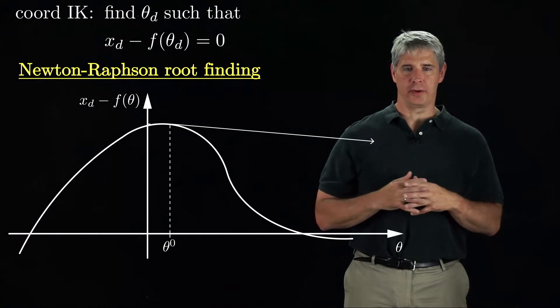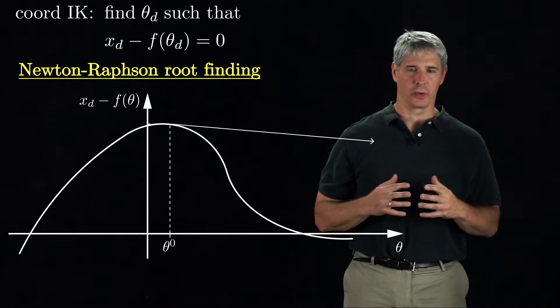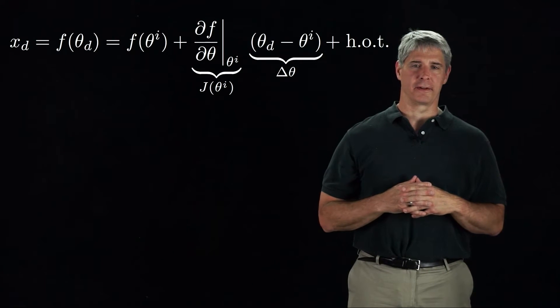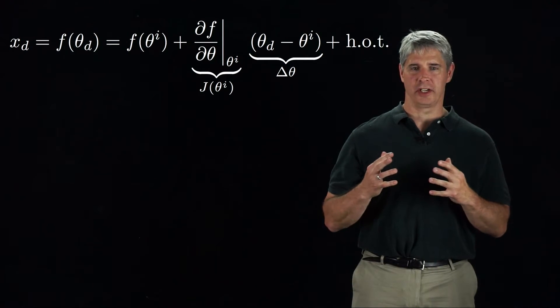To generalize the Newton-Raphson procedure to vectors of joints and endpoint coordinates, not just scalars, we can write the Taylor expansion of the function f of theta around theta-d, as shown here.